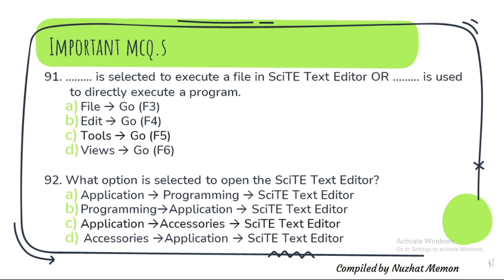Question 91: What is selected to execute a file in Skite text editor, or to directly execute a program? It is Tools > Go, or you can use F5. Question 92: What option is selected to open the Skite text editor? The correct option is C — Application > The Necessary > Skite text editor.